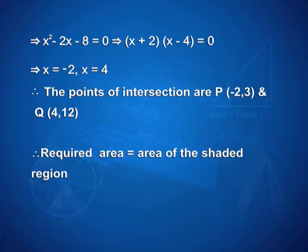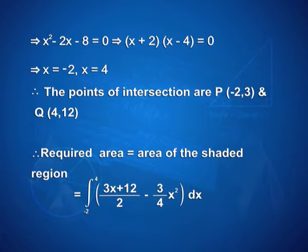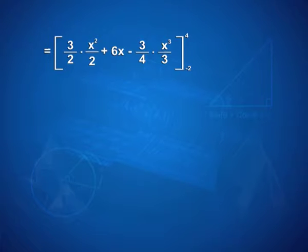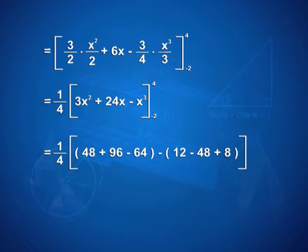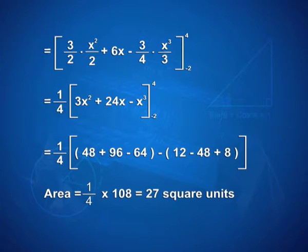Therefore, the required area equals the integral from −2 to 4 of [(3x + 12)/2 − (3/4)x²] dx, which equals [(3/2)(x²/2) + 6x − (3/4)(x³/3)] with limits −2 and 4. That gives (1/4)[3x² + 24x − x³] with limits −2 and 4. Applying the limits, we have (1/4)(48 + 96 − 64 − 12 + 48 − 8) = (1/4)(108) = 27 square units.